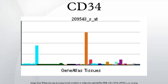In tumors, CD34 is found in alveolar soft part sarcoma, pre-B ALL, AML, AML-M7, dermatofibrosarcoma protuberans, gastrointestinal stromal tumors, giant cell fibroblastoma, granulocytic sarcoma, Kaposi's sarcoma, liposarcoma, malignant fibrous histiocytoma, malignant peripheral nerve sheath tumors, meningeal hemangiopericytomas, meningiomas, neurofibromas, schwannomas, and papillary thyroid carcinoma. A negative CD34 may exclude Ewing's sarcoma/PNET, myofibrosarcoma of the breast, and inflammatory myofibroblastic tumors of the stomach.